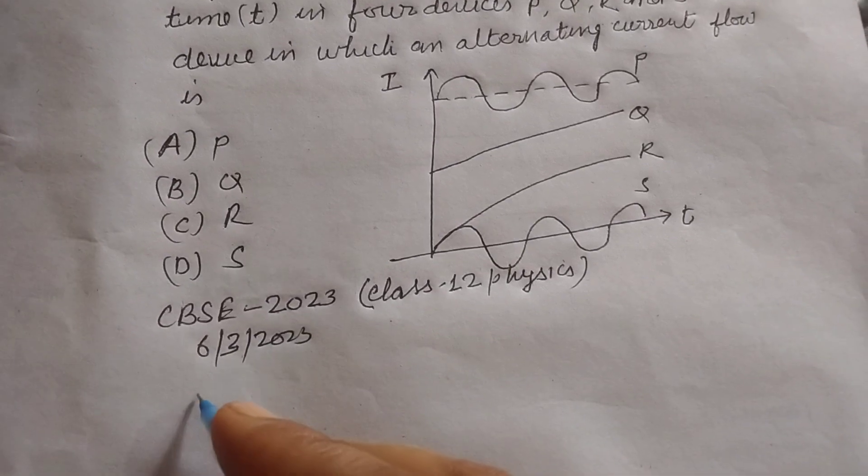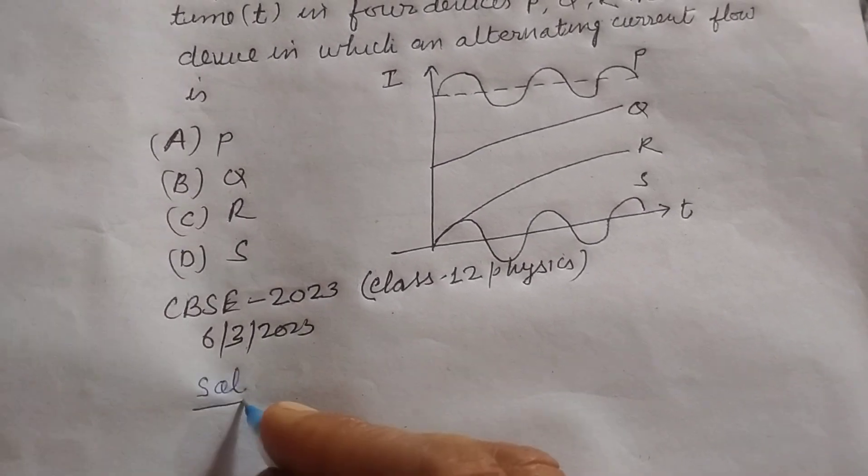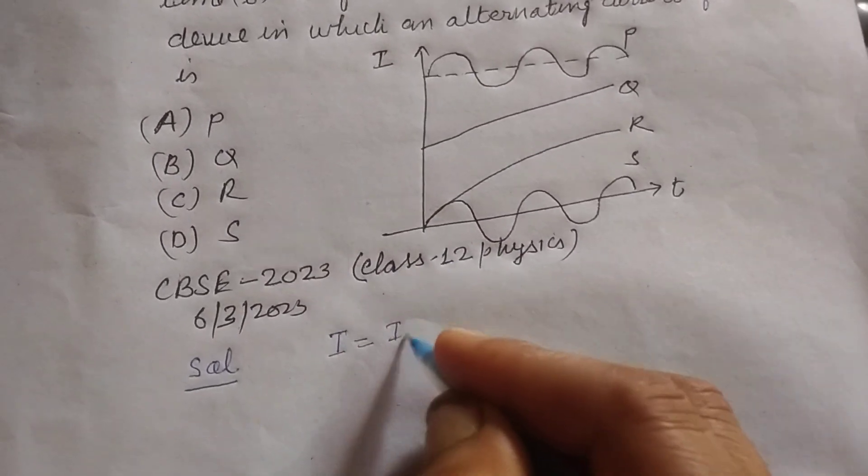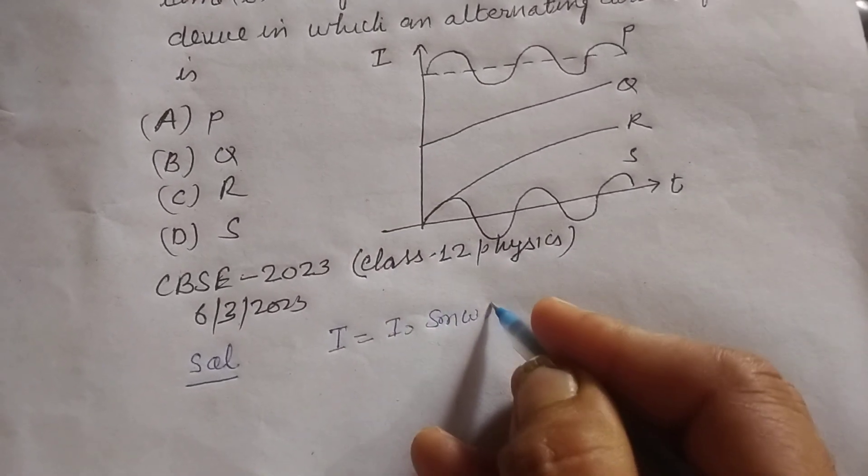So student, this is a question based on alternating current. The equation of alternating current is I equal to I naught sin omega t.